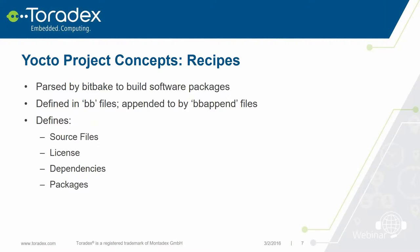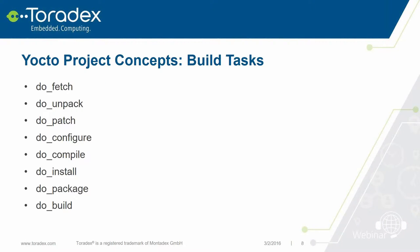Recipes are a type of metadata parsed by BitBake to build software packages. They're quite crucial to the build system and probably the thing we spend the most time working on. They're defined by BB files and appended to by BB append files. These files define source files (local or remote), license information, runtime and build-time dependencies, and the packages to be created — and actually much more than that. Recipes also define build tasks. Common build tasks include do_fetch, do_unpack, do_patch, do_configure, do_compile, do_install, and do_package. The do_build task is the default, running through the typical build procedure.